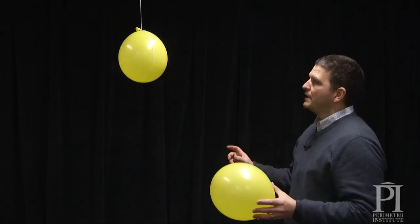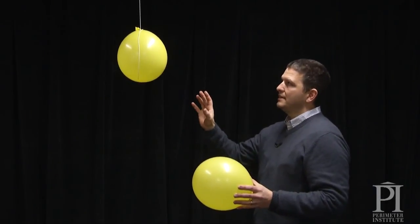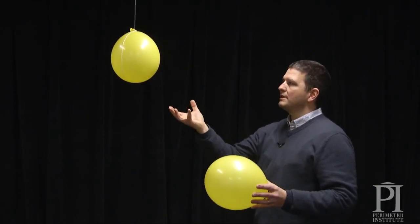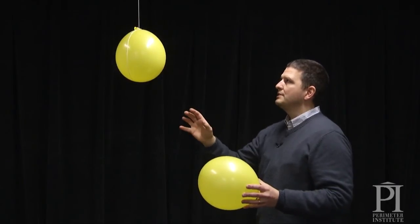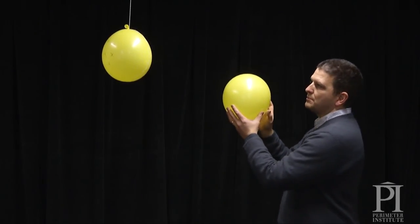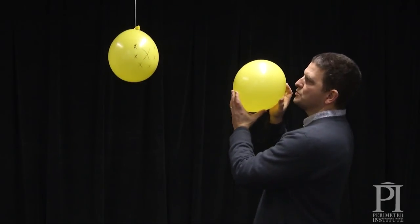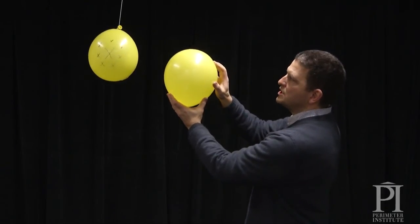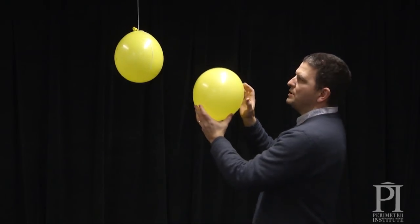Now, it's very important that the balloon hanging from the ceiling have a uniform charge all around its surface. If it doesn't have a uniform charge, when you approach it with a balloon that is charged, it's not going to swing away, it's going to spin away. And we don't want that.